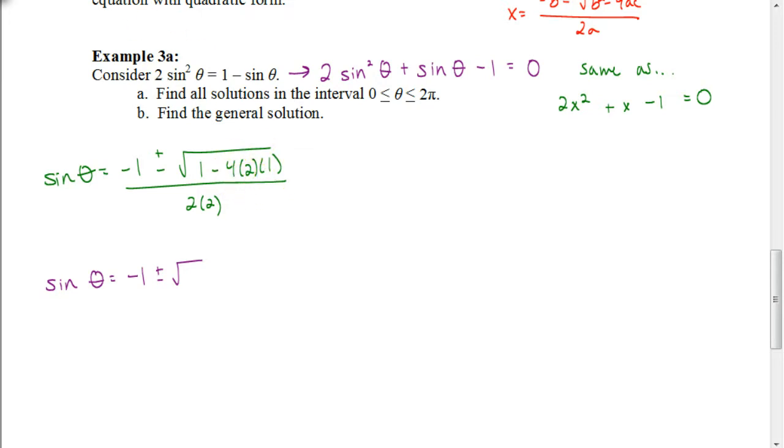Oops, this is a negative 1. The value for c is a negative 1 there. Missed that. But negative 4 times 2 is negative 8 times negative 1 would be a positive 8. So we would have 1 plus 8, and 1 plus 8 is 9. So we get the square root of 9. All of that is going to be divided by 4.